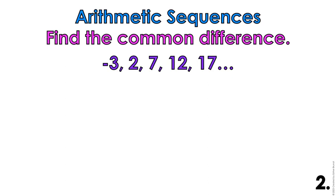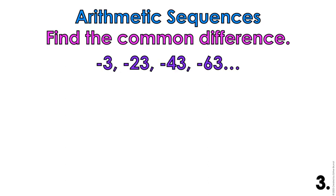For the next sequence: 2 minus negative 3, 7 minus 2, 12 minus 7, and then 17 minus 12. d equals 5 — very good, because it was constant.